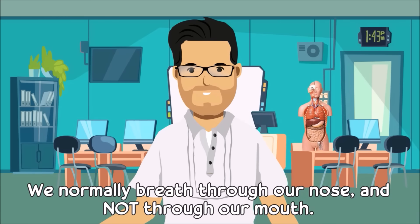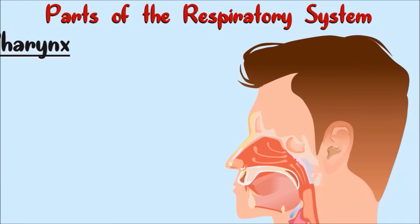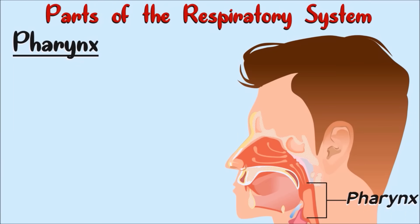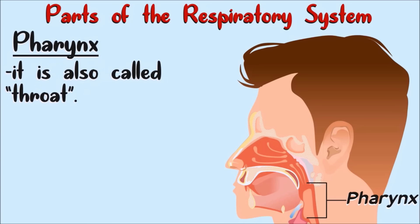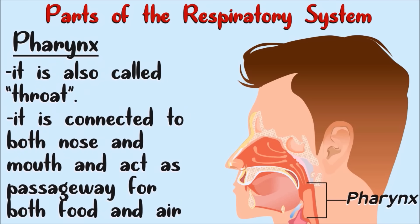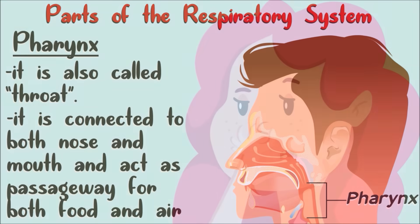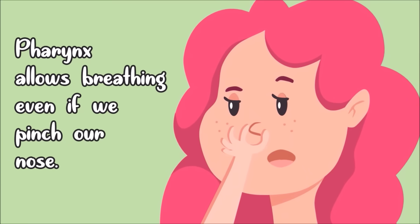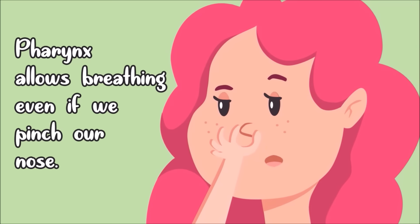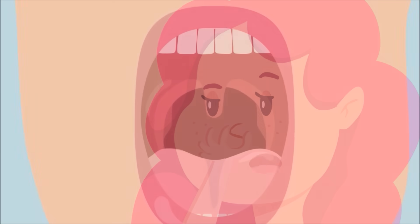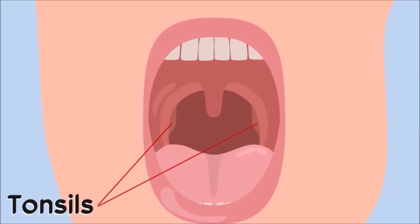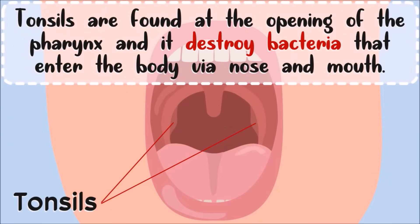This is the pharynx — this tube is also called the throat. It is connected to both the nose and mouth and acts as a passageway for both air and food. This is why we can still breathe even if we pinch our nose. This structure is called the tonsils. It is found at the opening of the pharynx and it destroys bacteria that enter the body via the nose and mouth.